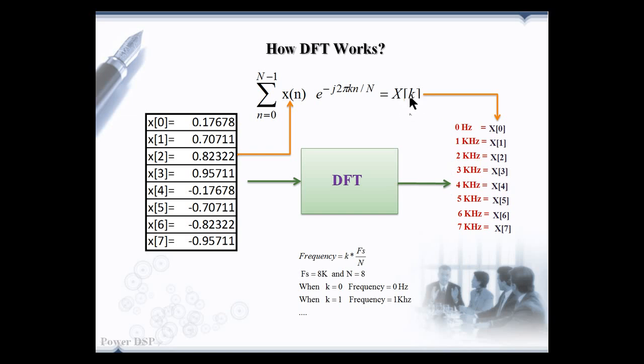We are doing discrete Fourier transform to explore the frequency details present in the signal. Input is having 8 samples and the output of the DFT is also 8 samples. Each index of the output represents a frequency value and index k runs from 0 to n-1. N is the number of points, here it is 8, so k runs from 0 to 7. Each index corresponds to the frequency k times fs divided by n.